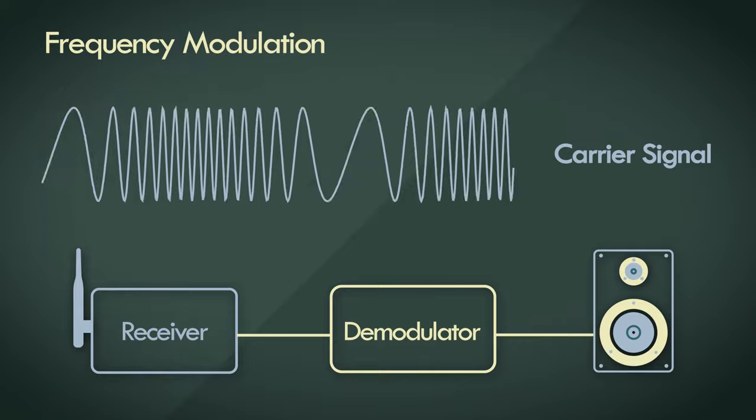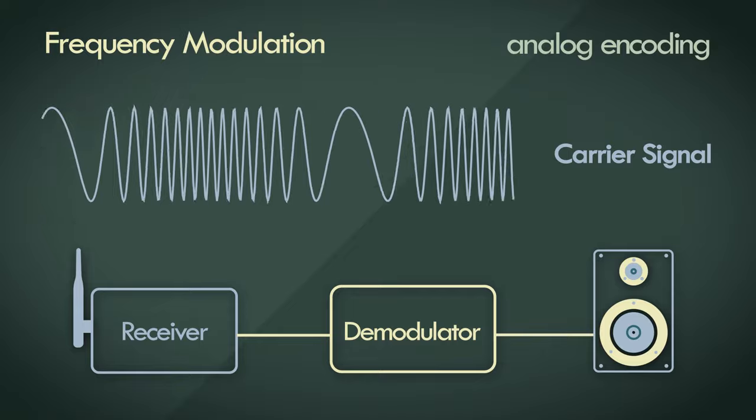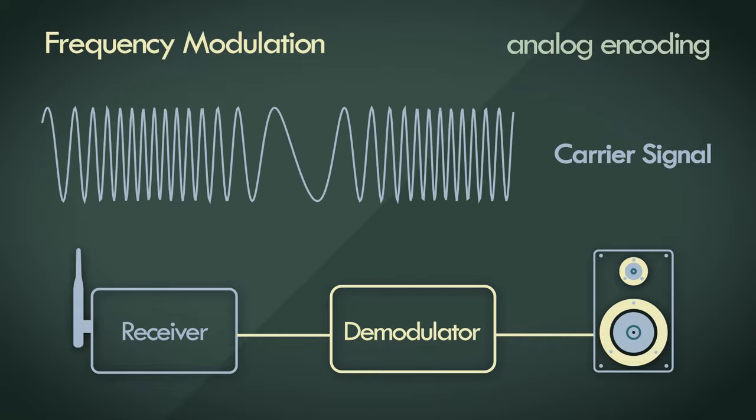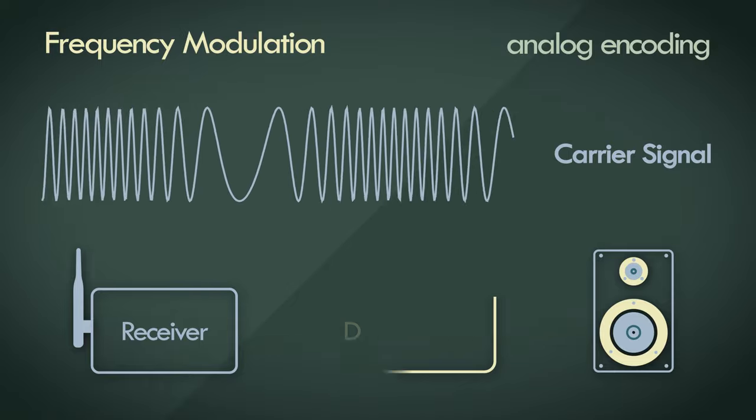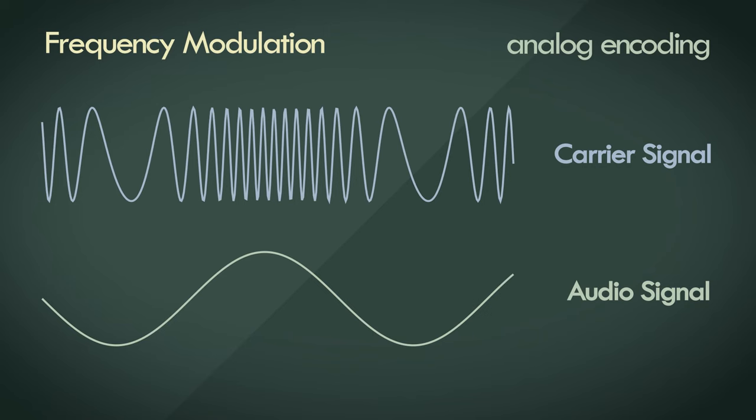All of what I described here happens purely in the analog domain. There are no digital signals here, nor any digital processes. So why did I talk about frequency modulation here? I talked about it because the concept of modulation and encoding are transferable concepts, and can be used in the digital domain.